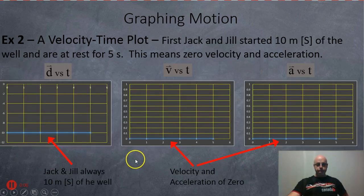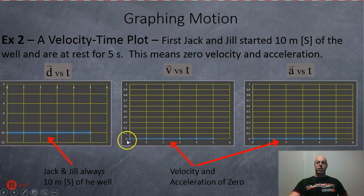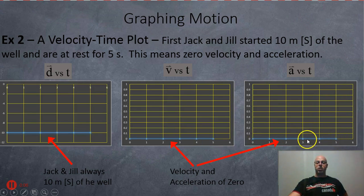For the first part, they're 10 meters south of the well — so negative 10 on our axis — and they just sit there for five seconds: a flat line doing nothing. The velocity is zero for that five-second interval, and there's no acceleration either.